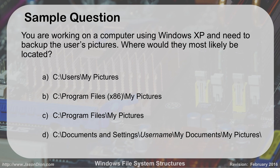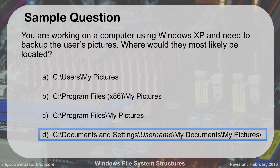Here's a sample question: You're working on a computer using XP and need to back up the user's pictures. Where would they be located? The answer is D: C:\Documents and Settings\username\My Documents\My Pictures. XP uses 'Documents and Settings.' C:\Users\My Pictures would be Windows 7 (since it uses 'My Pictures'). If it just said 'Pictures' without 'My,' that would be Vista.